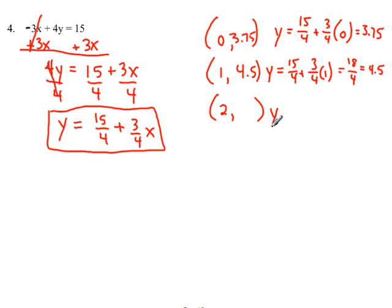And the last one, 15 fourths plus 3 fourths times 2, that's going to give you 21 over 4, which is going to be 5.25. And those are the three solutions to this line.